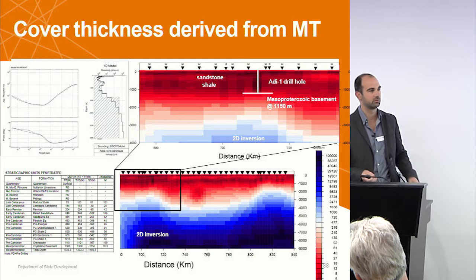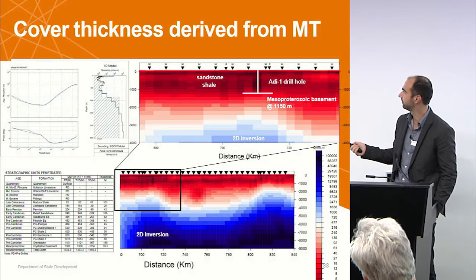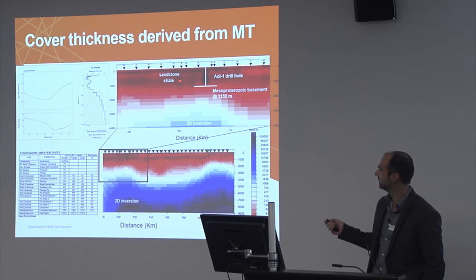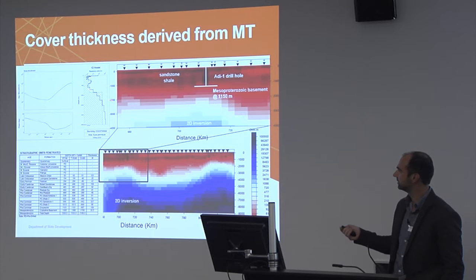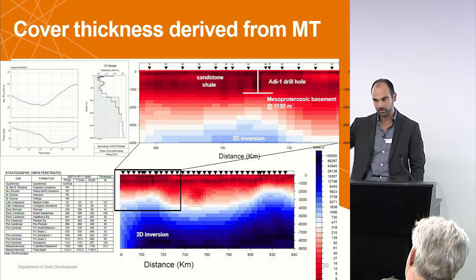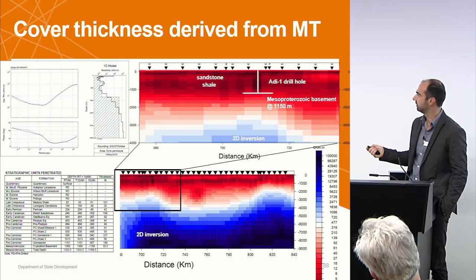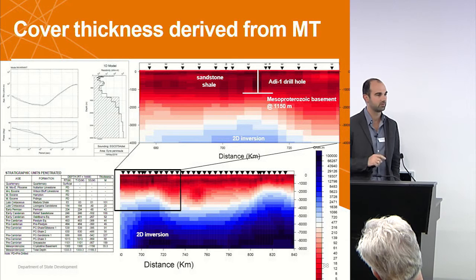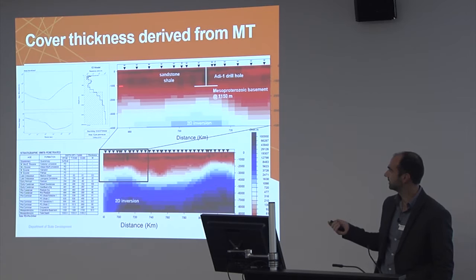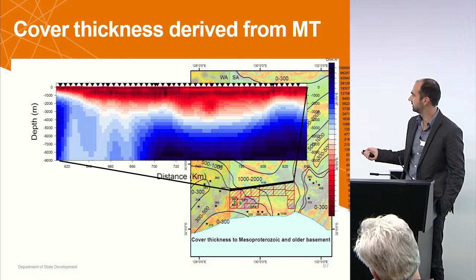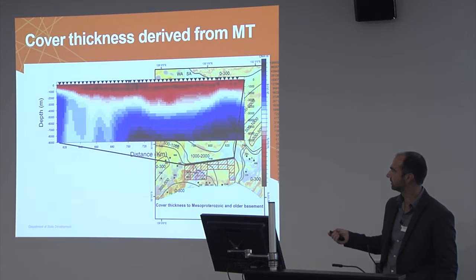We also ran one-dimensional models by taking a station right next to the drill hole and running a 1D inversion to see what depths we get for different layers. Running an OCam inversion — the jagged lines — and then fitting an 8-layer model gives a view of the sedimentary environment. Very conductive values are associated with shales; sandstone is slightly more resistive but still conductive. Then you run into truly resistive basement. The 1D model slightly overestimates basement depth at just over 1,200 meters, but where the OCam inversion starts increasing in resistivity is a bit shallower — MT is quite good for imaging depth to basement and should be used together with other techniques.